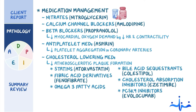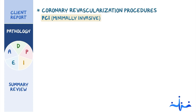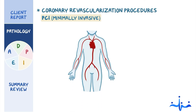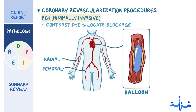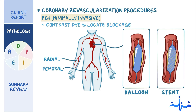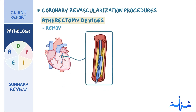If stable angina isn't effectively treated by lifestyle modifications and medication therapy, coronary revascularization procedures may be necessary. PCI is a minimally invasive procedure that involves inserting a catheter through the radial or femoral artery and injecting contrast dye to locate the blockage. After the blockage is located, a tiny balloon is inserted in the obstructed coronary artery to compress plaque against the artery wall. If needed, a stent can be placed during PCI to keep the artery patent. Alternatively, atherectomy devices are used to remove the plaque.